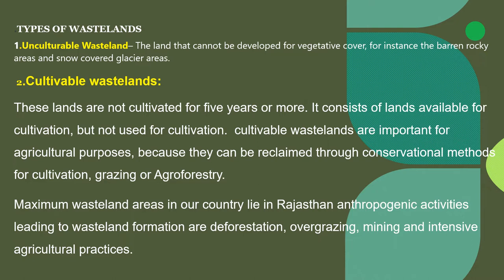Rajasthan has the maximum area of wastelands, as it has desert and many anthropogenic activities are also present there, including deforestation, overgrazing, and mining, which are major problems contributing to wasteland creation.